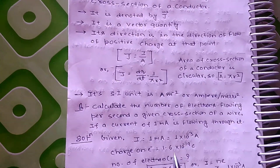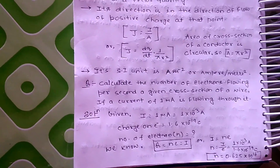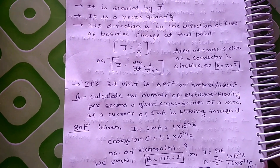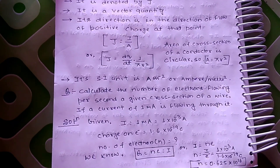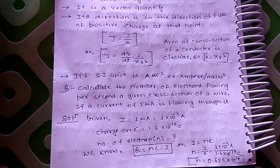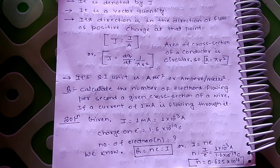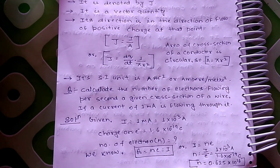हमको n का value calculate करना है। I का value दिया है: 1 milliampere = 1 × 10⁻³ ampere। Charge on electron = 1.6 × 10⁻¹⁹ coulomb। q = ne, इसलिए I = ne, तो n = I upon e = (1 × 10⁻³) / (1.6 × 10⁻¹⁹) = 0.625 × 10¹⁶। यह है number of electrons flowing through the cross section of that conductor.